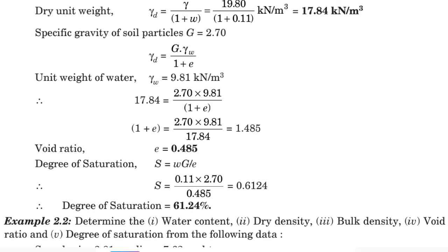We know the w value, G value, and e value. So we can substitute, S equals 0.11 times 2.70 divided by 0.485. We get the value 0.6124, so degree of saturation in percentage is 61.24%.